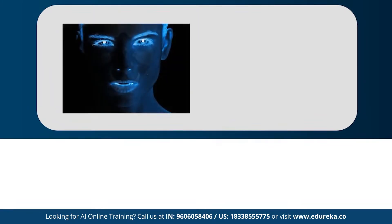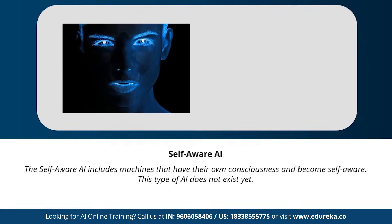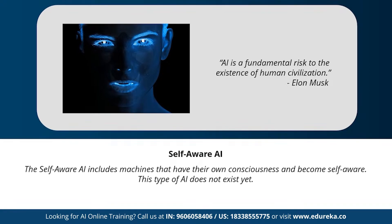Moving on to our last type of AI: self-aware artificial intelligence. Let's hope we don't reach the state where machines have their own consciousness and become self-aware. This type of AI is a little far-fetched, but achieving a stage of super intelligence might be possible in the future. Geniuses like Elon Musk and Stephen Hawking have constantly warned us about the evolution of AI. Do you ever think we'll reach the stage of artificial super intelligence?